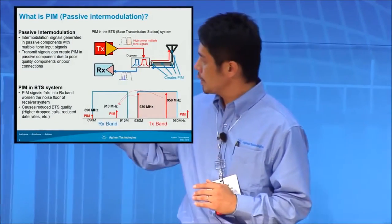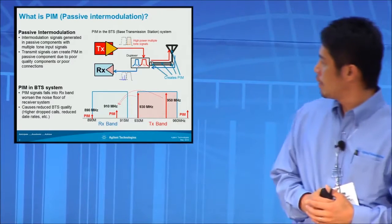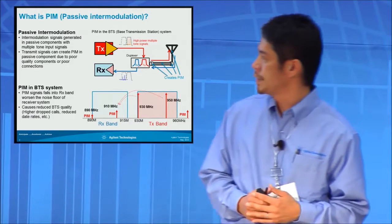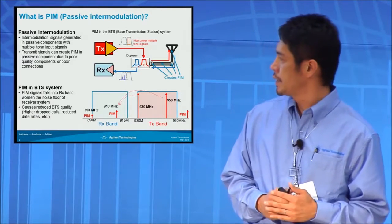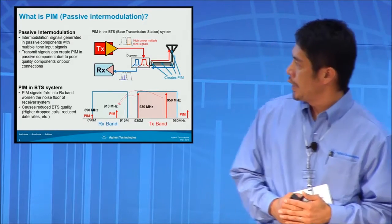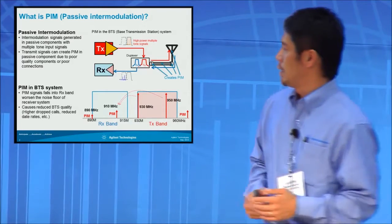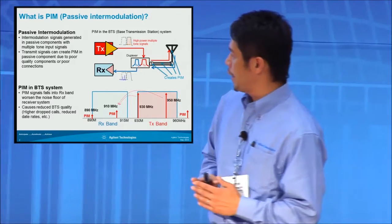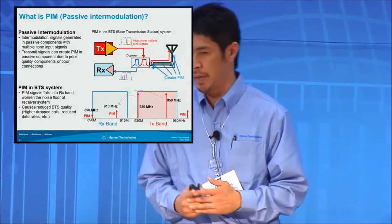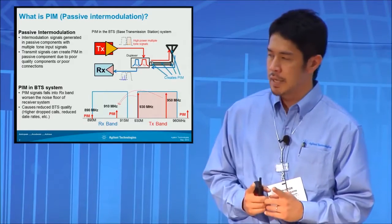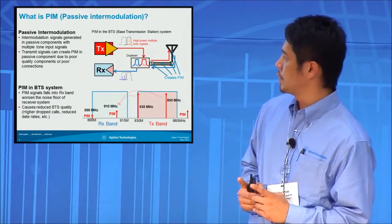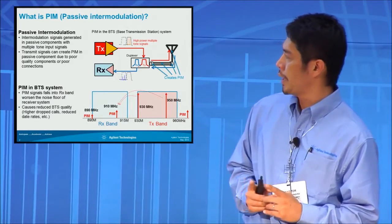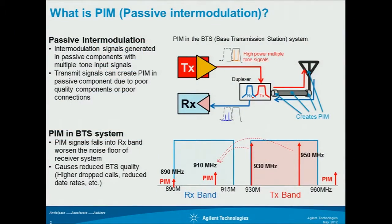This is a model of the 900 MHz GSM system. If you have 930 and 950 MHz two tones, it creates a 910 MHz PIM, and if it falls into the RX path, it can be noise for the RX path.